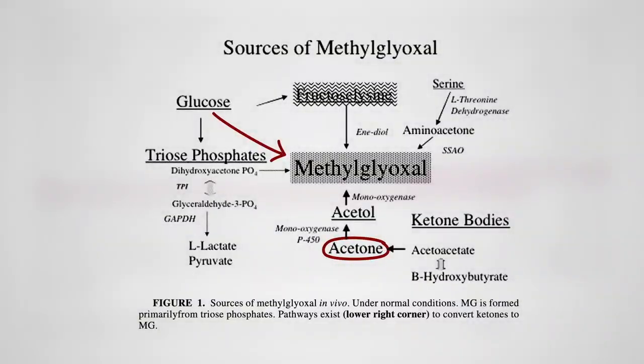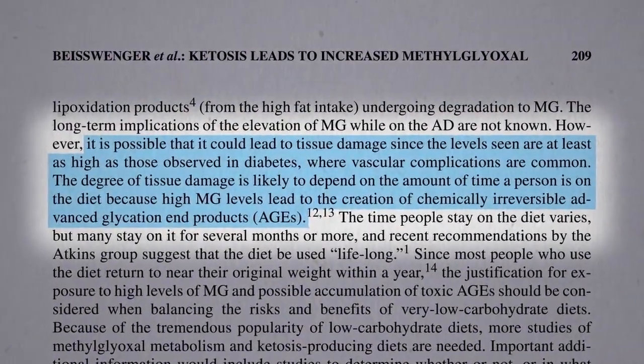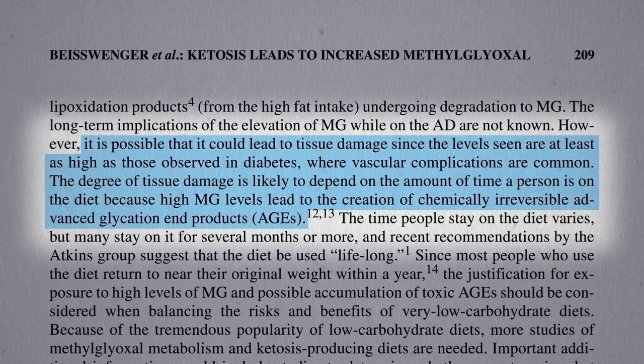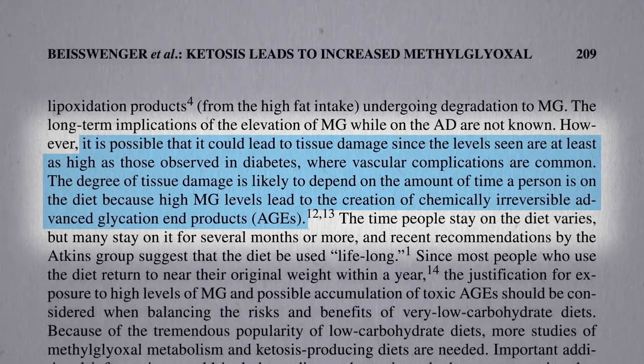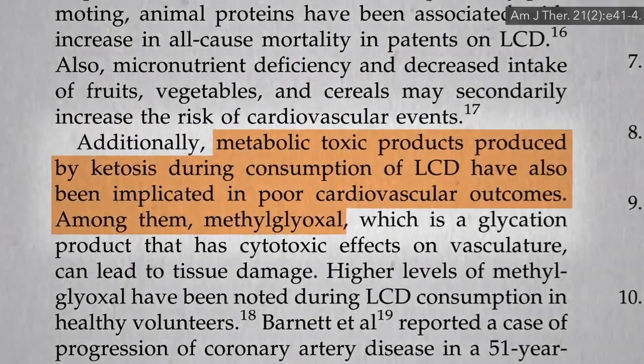Acetone can oxidize in the blood to acetal, which may be a precursor for methylglyoxal. That may be why keto dieters can end up with levels of this glycotoxin as high as those with out-of-control diabetes, which can cause the nerve damage and blood vessel damage you see in diabetics. That's another way keto dieters can end up with a heart attack.